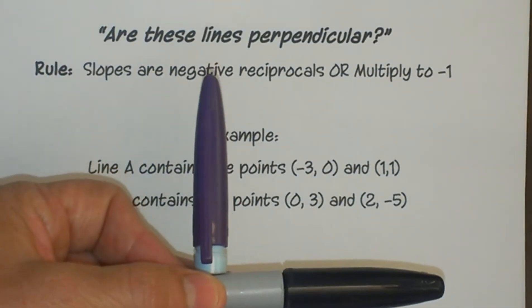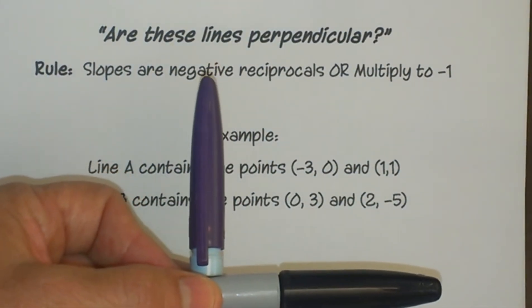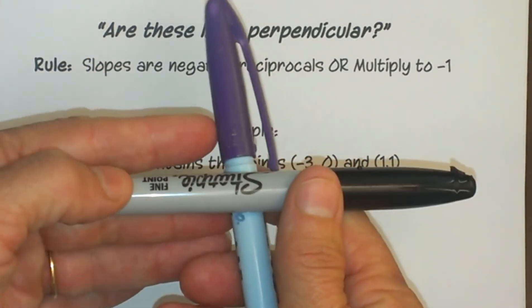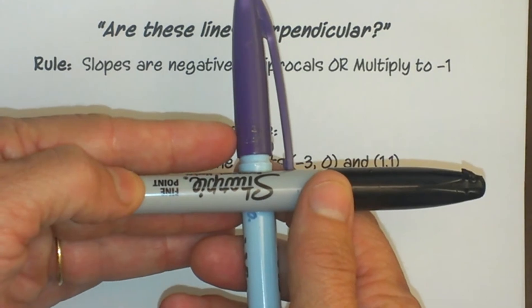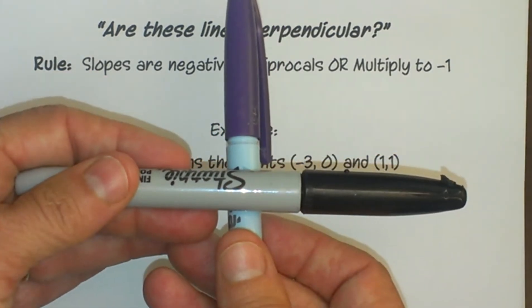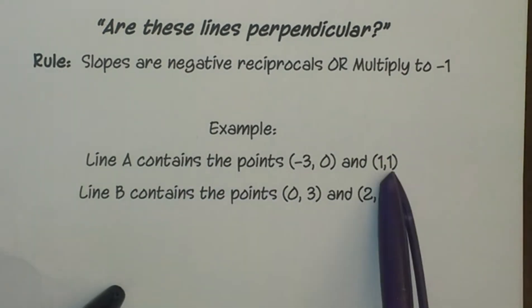Today we are going to look at the question, are these lines perpendicular? What does perpendicular mean? It means that two lines cross at right angles, so I've got my pen set up to be perpendicular. That's what we are trying to figure out, but this time we are given points.